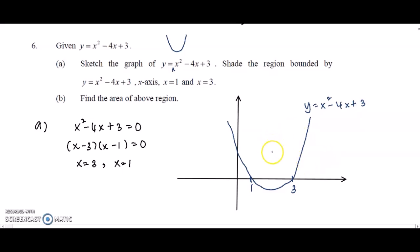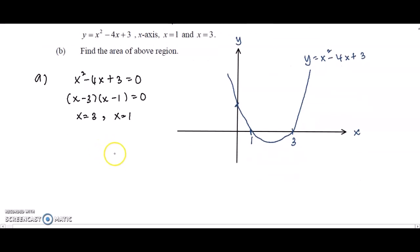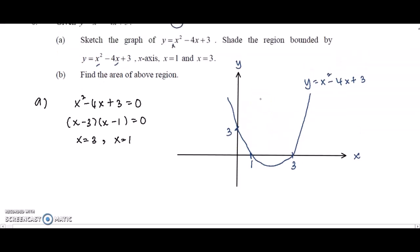After sketching, we find the y-intercept, which is important for graph sketching. Substituting x equals 0 gives y equals 3, so the y-intercept is 3. We then shade the region bounded by the curve, the x-axis, x equals 1, and x equals 3. This region lies below the x-axis between the two roots.